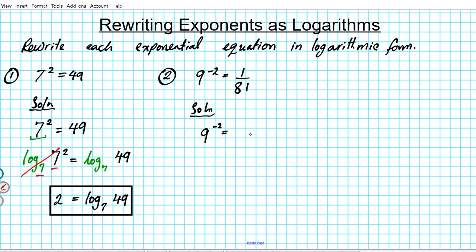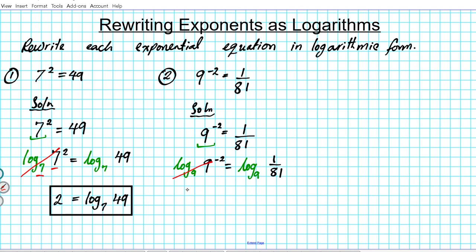We have 9 to the negative 2 equals 1 over 81. We replicate the same steps as number 1. The log whose base matches the base of the exponent — which is 9 — will cancel it out. Taking log base 9 of both sides, the base of the log and the exponent are identical on the left, so they cancel, leaving: negative 2 = log base 9 of (1/81).